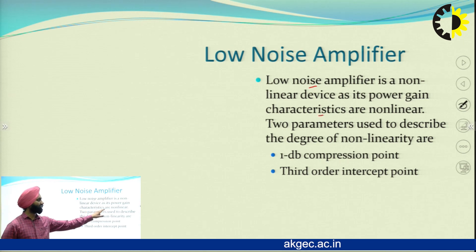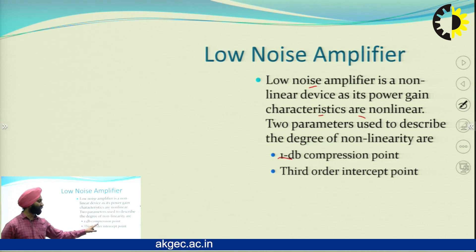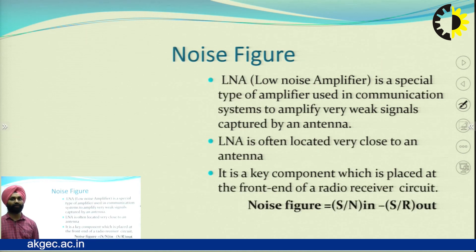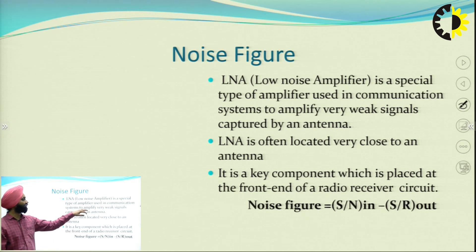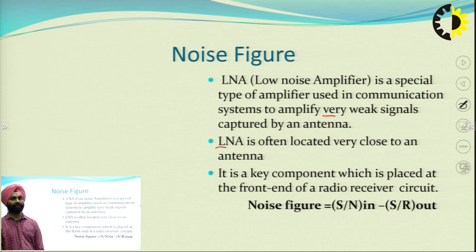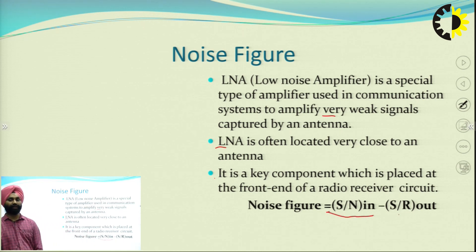The low-noise amplifier (LNA) is another important block in the communication system. It is a non-linear device whose power gain characteristics are non-linear. The two parameters describing non-linearity are the 1 dB compression point and the third-order intercept point. The noise figure is important — LNA is a special amplifier used to amplify very weak signals captured by the antenna, and it is often located very close to the antenna. The noise figure is given as the signal-to-noise ratio at the input minus the signal-to-noise ratio at the output in dB.